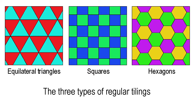It turns out that there are only three types of regular tiling possible: those formed from equilateral triangles, squares, or regular hexagons. The reason these three and only these three work is that their interior angles — 60 degrees, 90 degrees, and 120 degrees respectively — all divide into 360 degrees exactly, which is the angle that tiles must make where their vertices or corners meet.